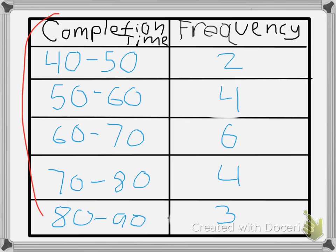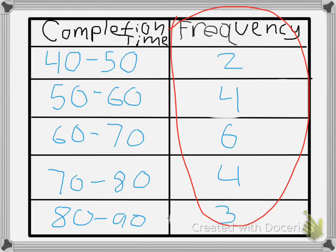The column on the left side will be on the x-axis of the histogram and will show the completion time for the 7th graders. The column on the right side is the y-axis. The y-axis shows the number of students that climbed the rock wall.